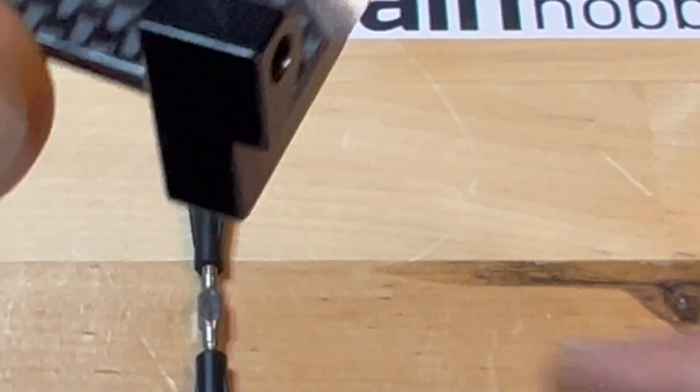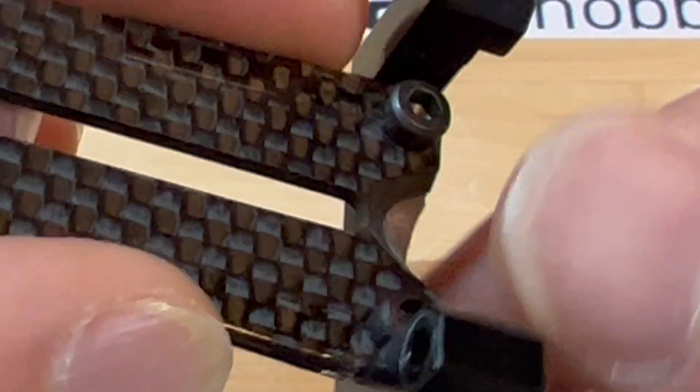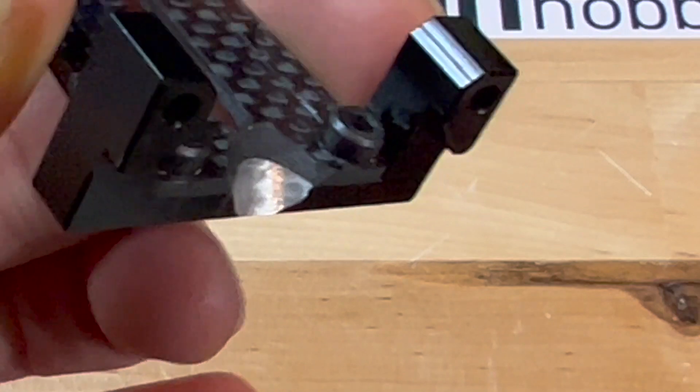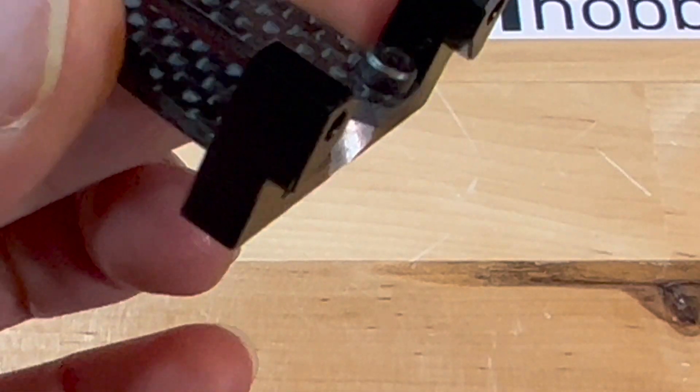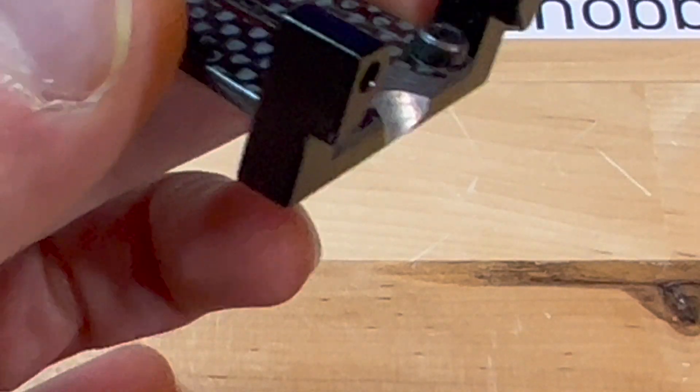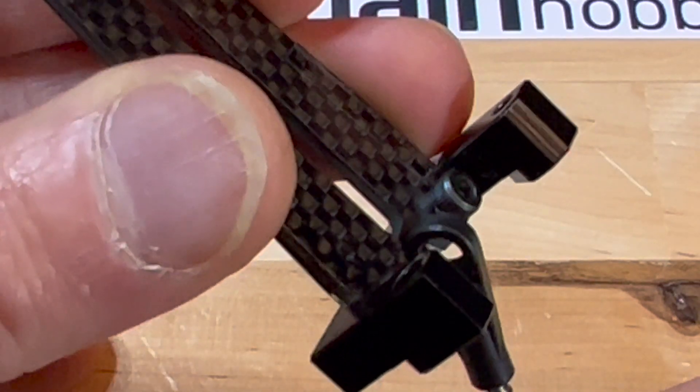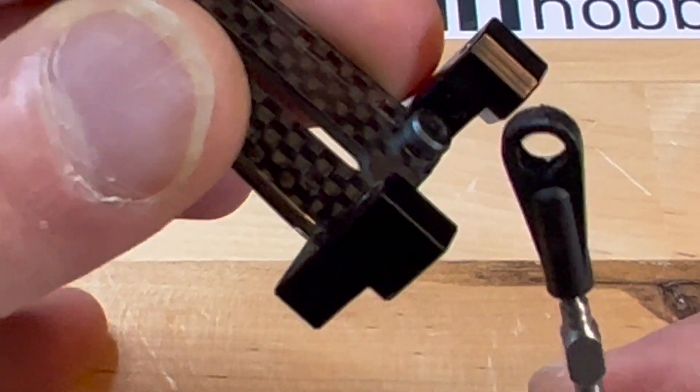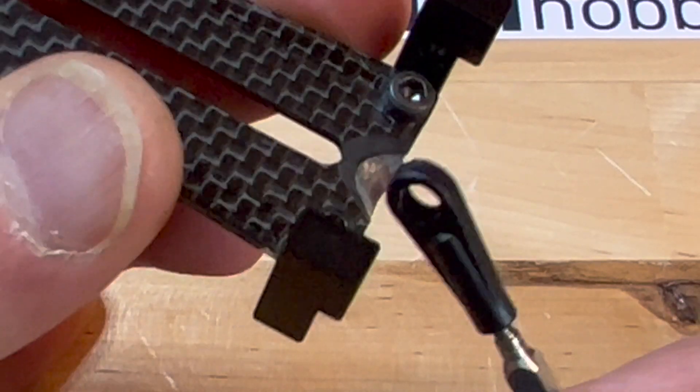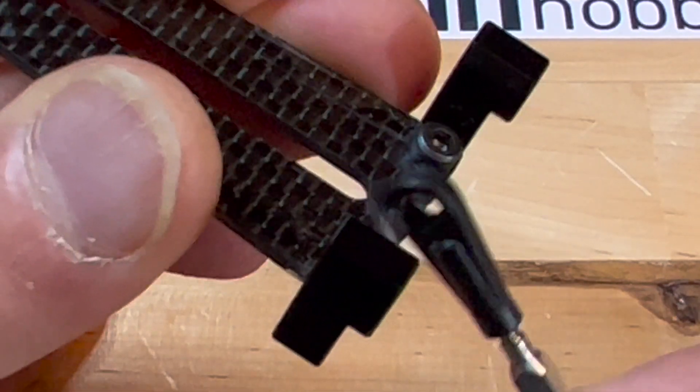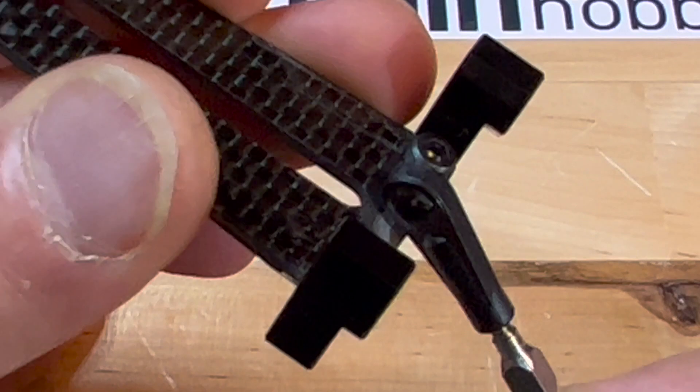Now what this does is that, especially for you guys using extremes of collective travel or cyclic travel, it gives you a little more room to prevent the elevator servo link from touching the servo bracket.